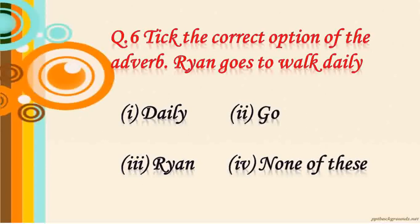Question number 6: identify the correct option of the verb and adverb. An adverb describes a verb, adjective, or another word. Here, 'work' is the verb and 'daily' describes the verb. So daily is the adverb. The right answer is daily.